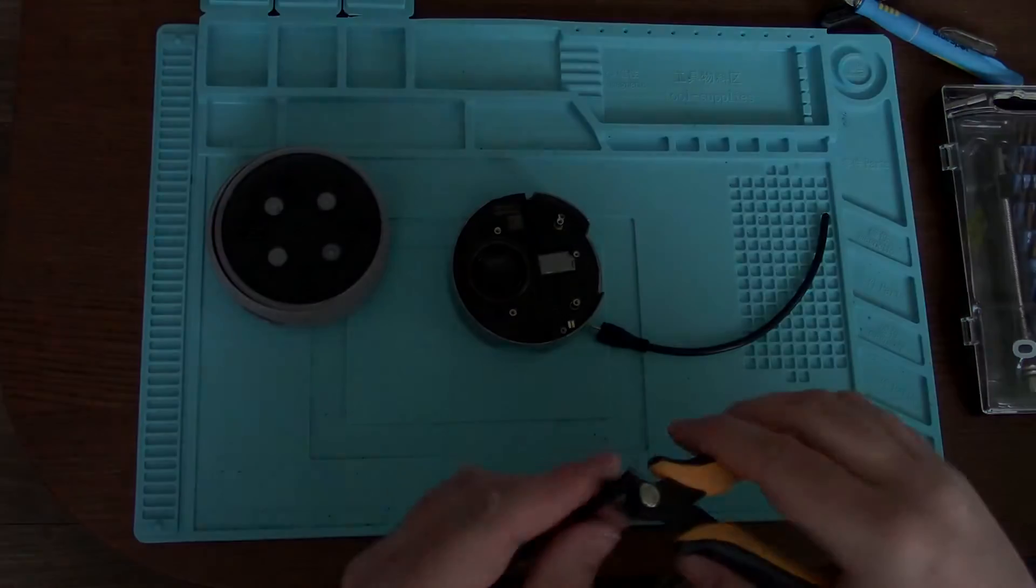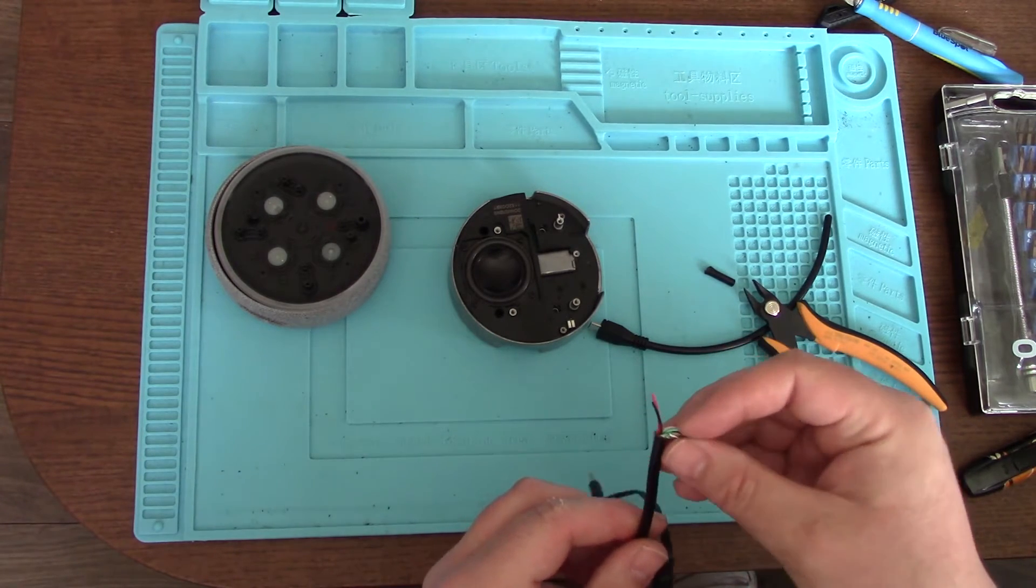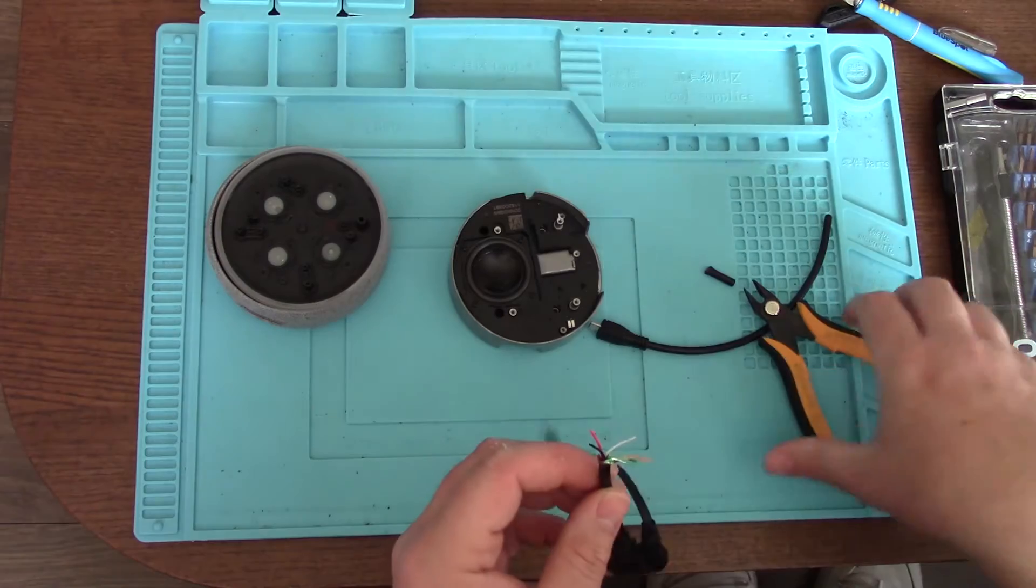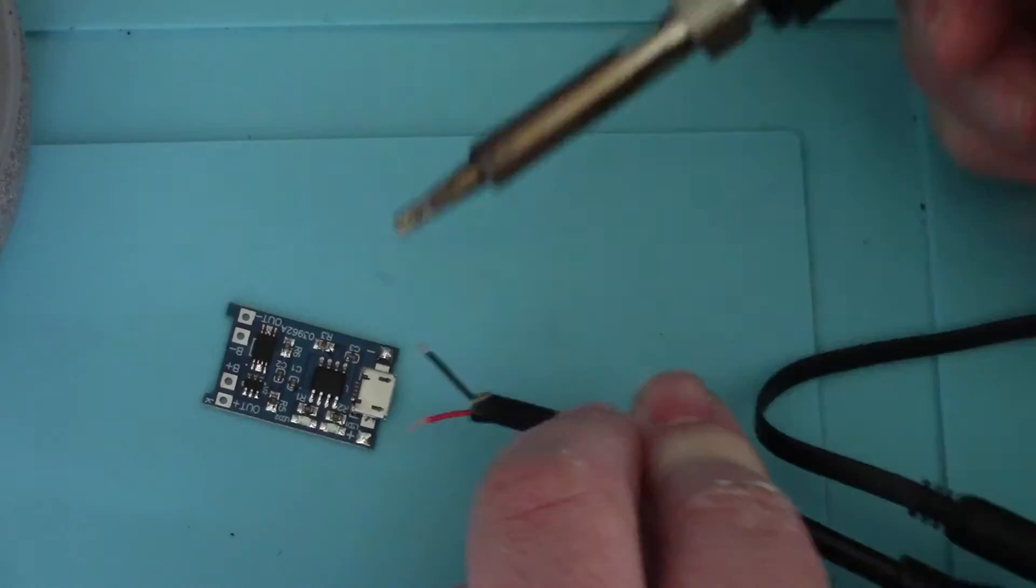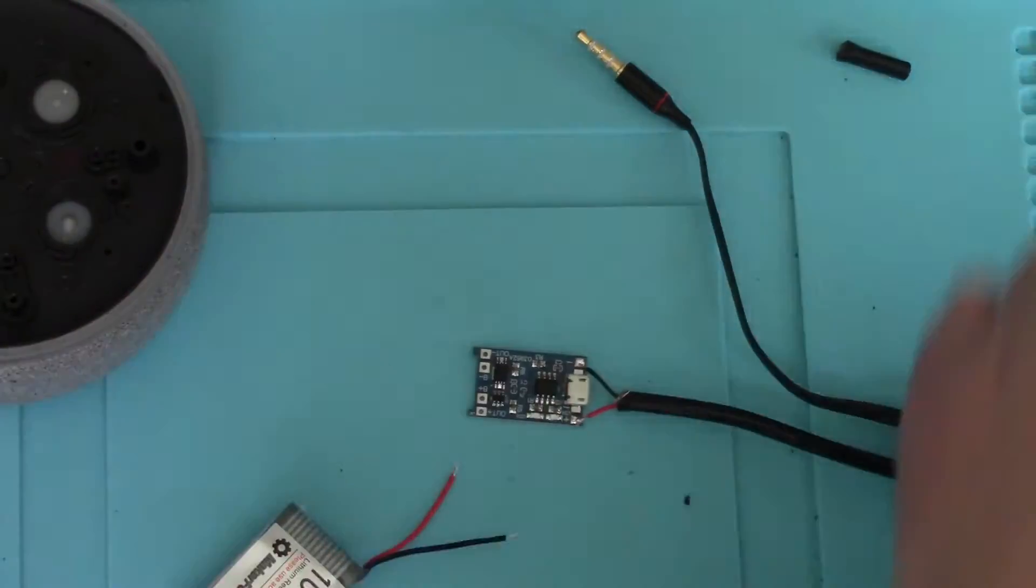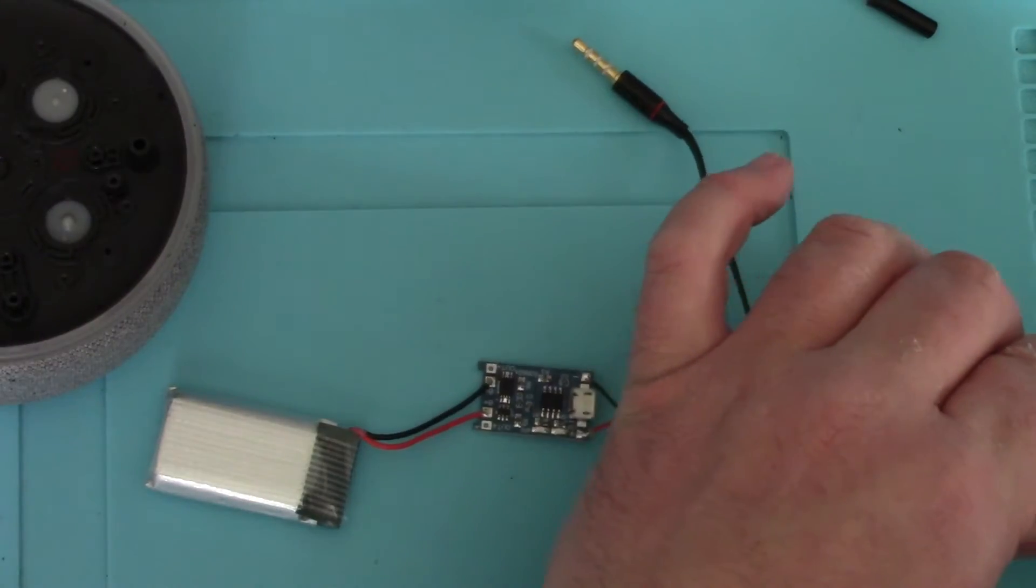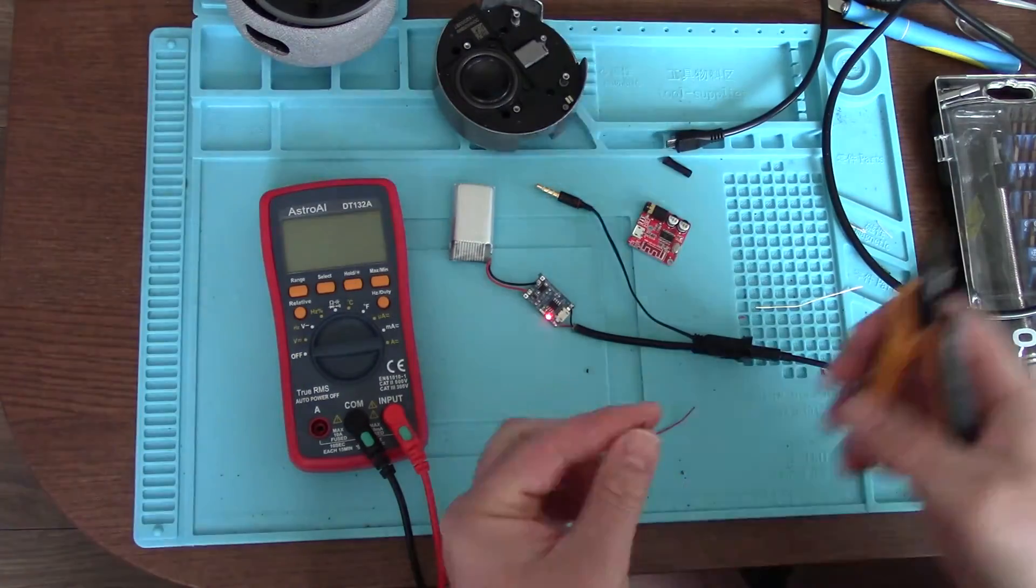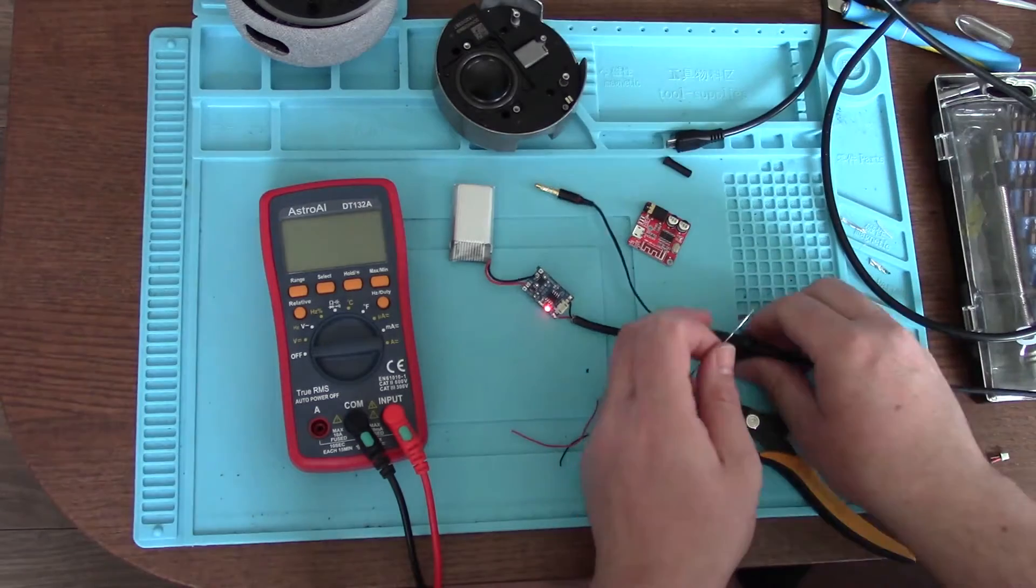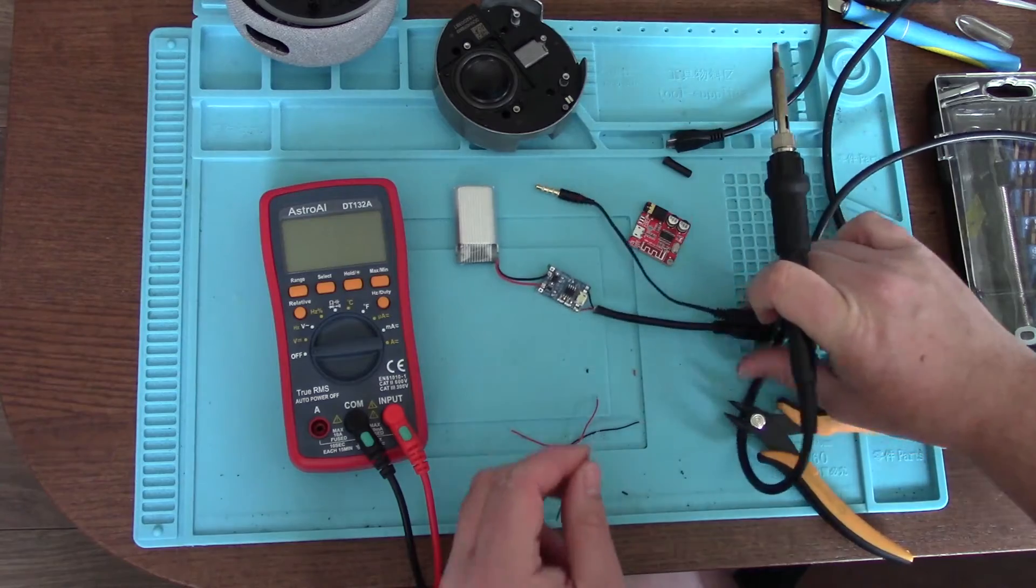There we go, it's done. No going back now. Black is ground, red is 5V DC power, so I'll snip these other ones off because I don't need them for now. Put that in. Stand well back. Oh, we've got a red light. Safety first.